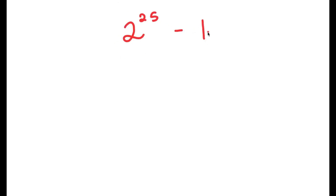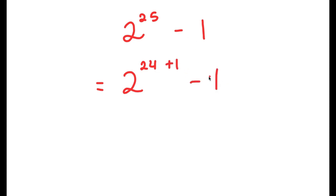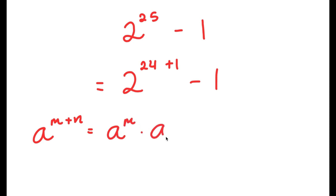In this video, I'm going to solve the problem 2 to the power of 25 minus 1. To first start, I'm going to rewrite 2 to the power of 25 as 2 to the power of 24 plus 1, and then we have our minus 1 at the end. The reason I'm doing this is so I can use the property a to the power of m plus n is equal to a to the power of m times a to the power of n.